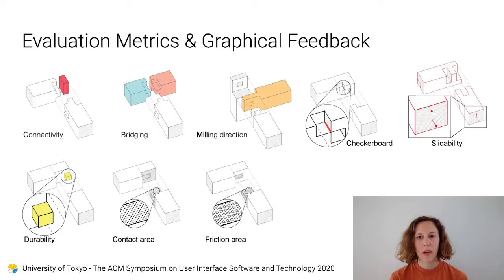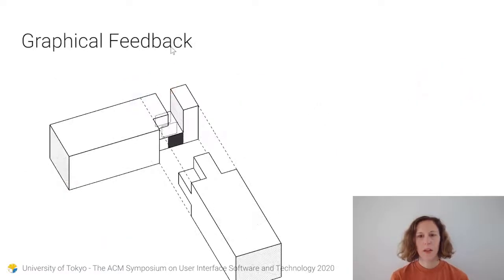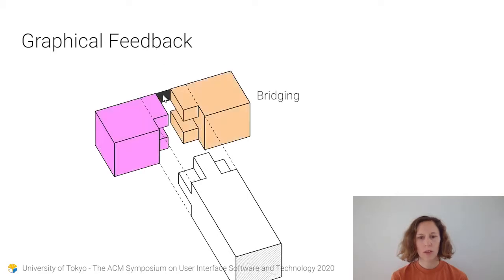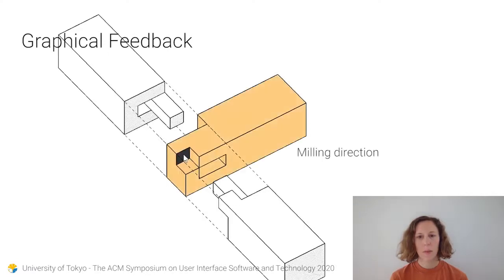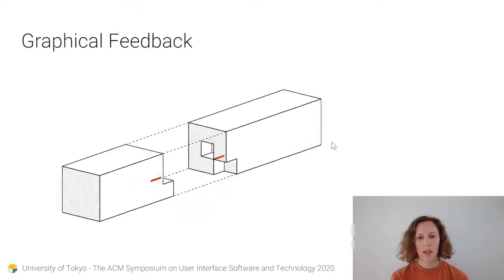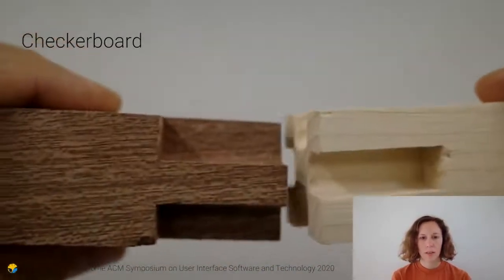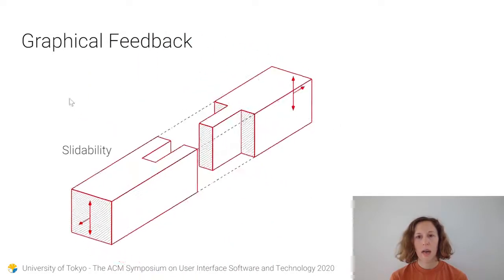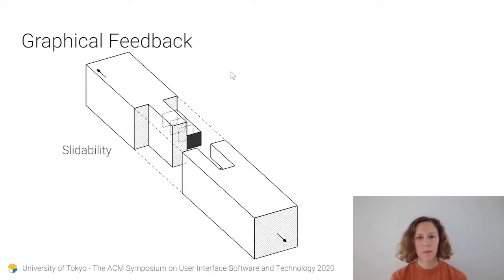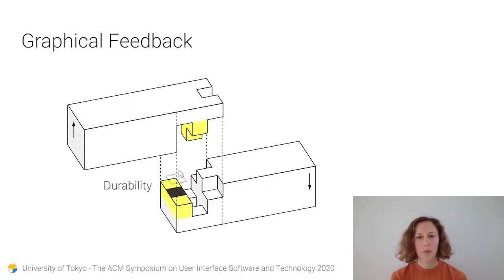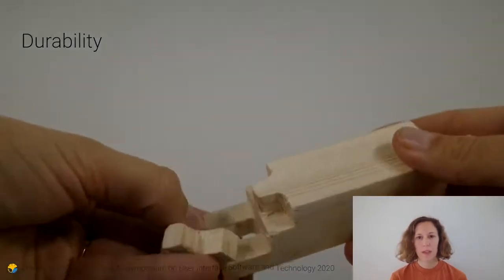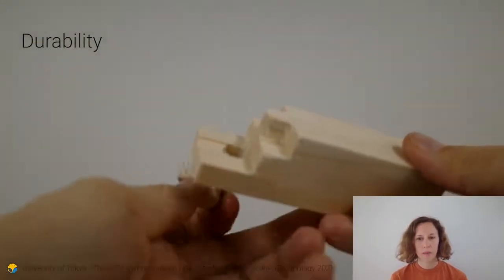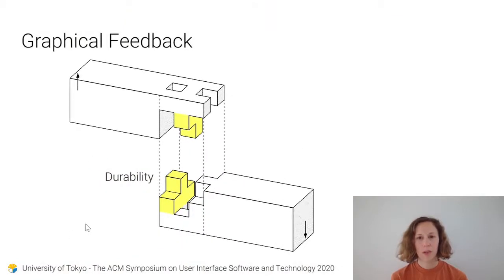Here is an overview of the eight evaluation metrics that we consider. Connectivity checks for detached voxels. Bridging checks so that the timber is not divided into two parts. The system also tests whether a joint can be milled out from one direction. Checkerboard patterns are detected because they are problematic for fabrication and assembly. Arrows at the end of each timber indicate active sliding directions. A red outline gives a hint that the timber is sliding in more than one direction. A yellow fill indicates voxels that are likely to break off, such as in this example. These parts are sticking out perpendicular to the wood fiber direction.